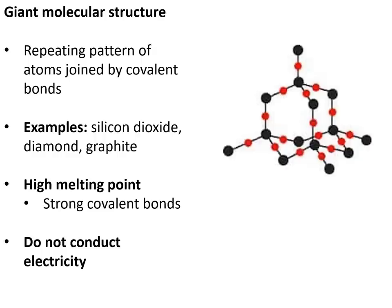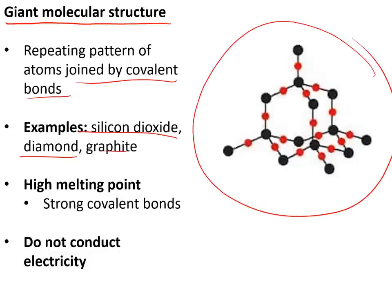Other covalent compounds form giant molecular structures with a repeating three-dimensional pattern of atoms joined by covalent bonds — for example, silicon dioxide, diamond, and graphite. In silicon dioxide, every silicon atom is joined to four oxygens and every oxygen atom is joined to two silicons, and that pattern repeats in each direction. They have a high melting point because melting requires breaking strong covalent bonds, and they do not conduct electricity because they have no free electrons — except for graphite, which is the exception.